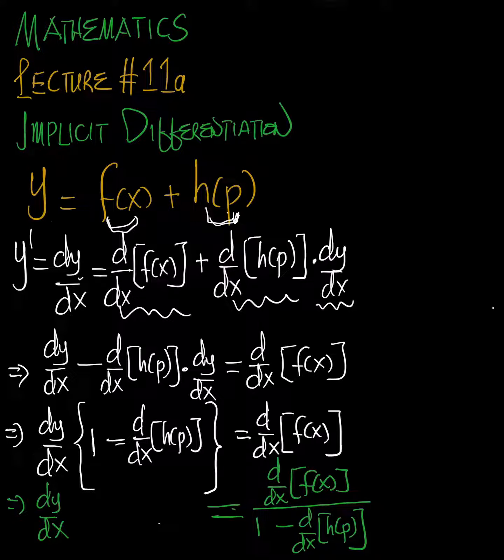Now, because this term has dy/dx multiplying, we can move it to the left-hand side. We're going to have dy/dx minus this whole thing equal to d/dx of f(x).